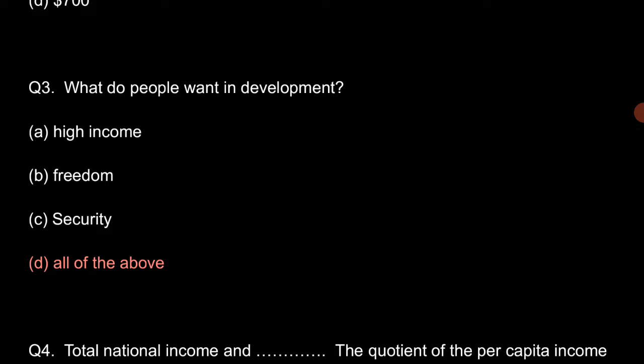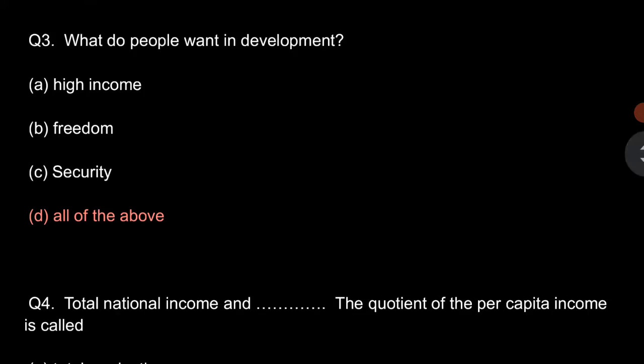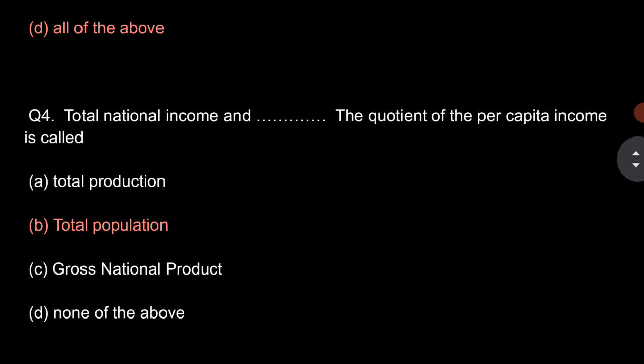Question number 3: What do people want in development? So, the people want high income, freedom, security — all of the above for development. So, option D is the correct answer.